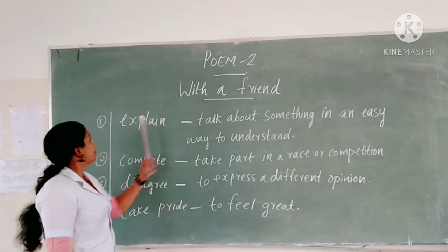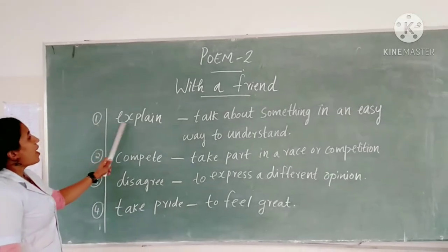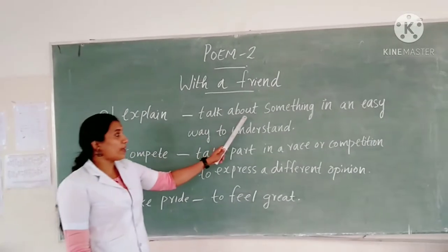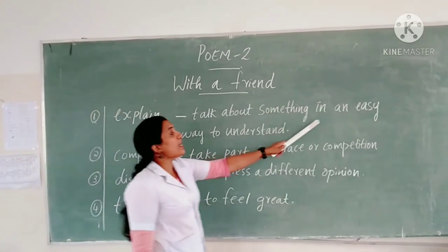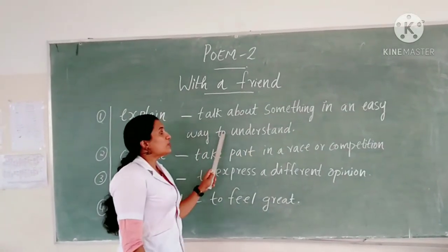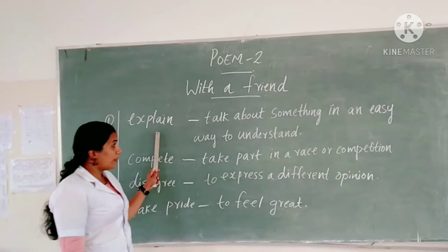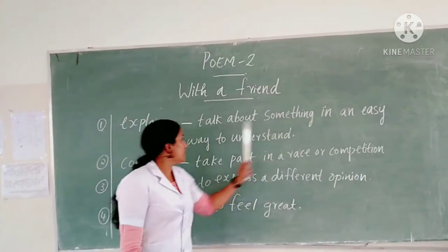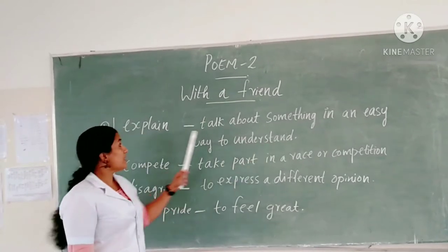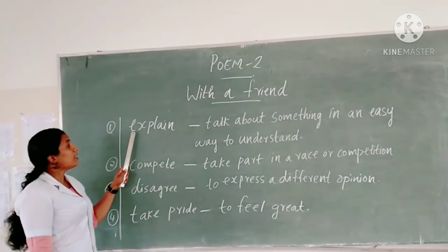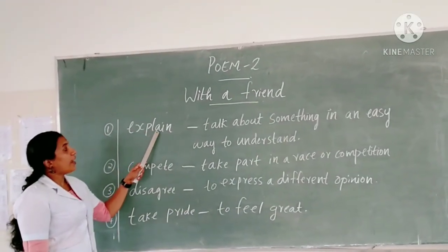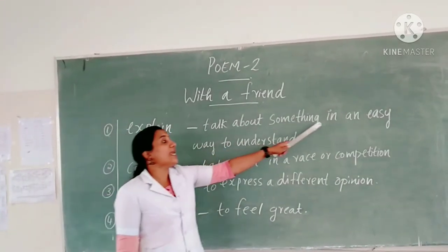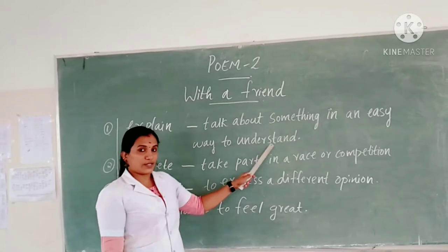With a Friend. The first word: explain. What do you mean by explain? Talk about something in an easy way to understand. Explain means talk about something in an easy way to understand. What is the spelling of explain? E-S-P-L-A-I-N. Explain means talk about something in an easy way to understand.